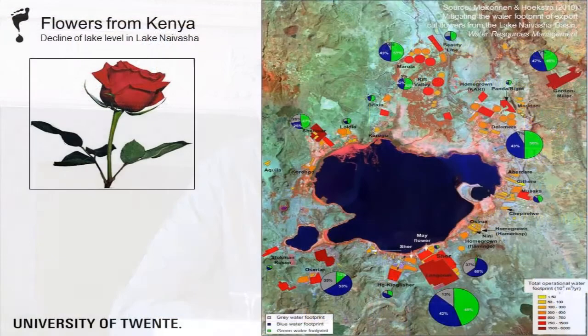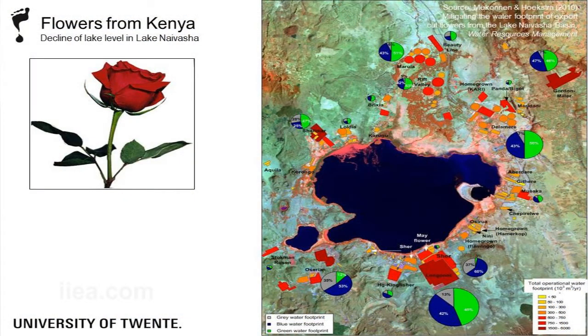If we talk about nicer things like flowers, we see the same thing. Even Dutch flowers do not often come from the Netherlands — they come from places like Peru, Colombia, Ethiopia, Kenya. This is Lake Naivasha in Kenya, a famous area for flowers. A lot of flowers are produced there for export to the Netherlands, then spread over Europe. It takes a lot of water to grow those flowers, and the lake is slowly going down. So again, it's not sustainable.